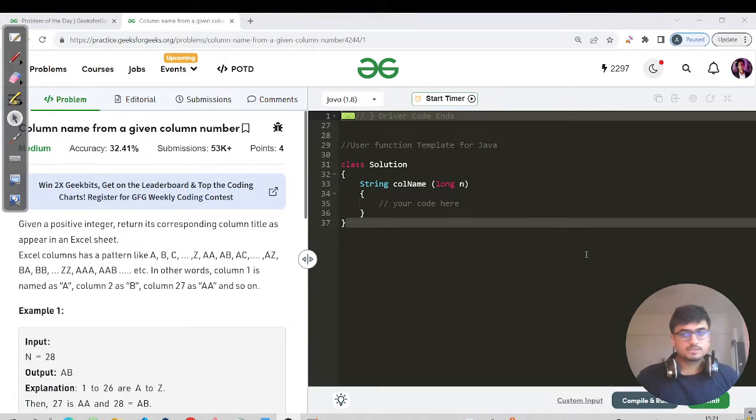Hello everyone, this is Akshay here. Let's start with today's problem. The name of the question is column name from a given column number. Given a positive integer, we have to return its corresponding column title as it appears in an Excel sheet.